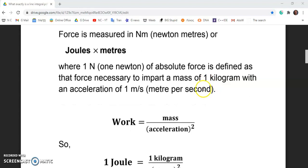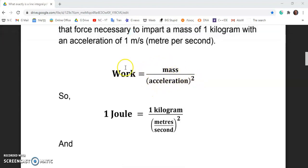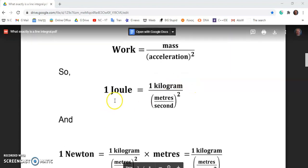which is work times distance. So force is measured in newton meters or joules or the product of joules times meters. Joules is work or energy. And of course, one newton meter is the absolute force that is necessary to impart a mass of one kilogram with an acceleration of one meter per second.